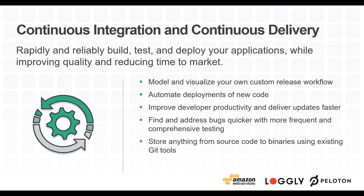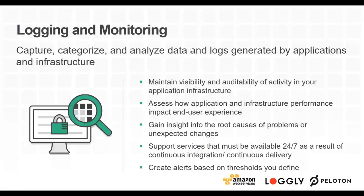Continuous integration and continuous deployment is what most people are familiar with when discussing DevOps. It allows you to model and visualize your release flow, automate deployments, increase productivity, define and address bugs quicker, run automated testing, and keep an agile deployment pipeline. For logging and monitoring, you can capture, categorize, and analyze data and logs from applications and infrastructure, giving visibility and auditability. It provides insights into root issues and enables creating alerts based on defined thresholds.